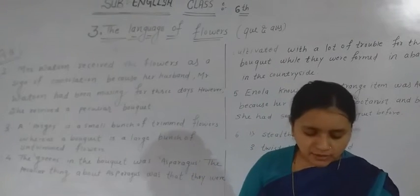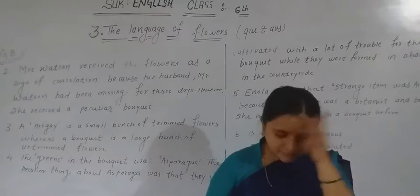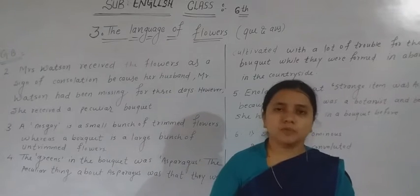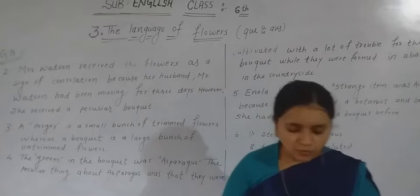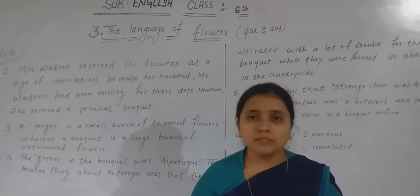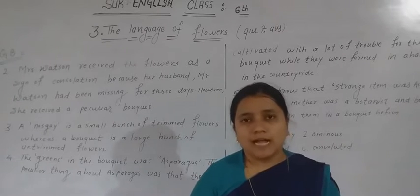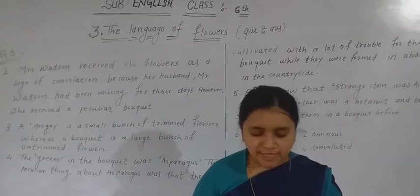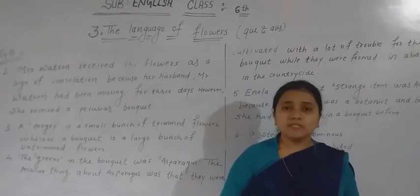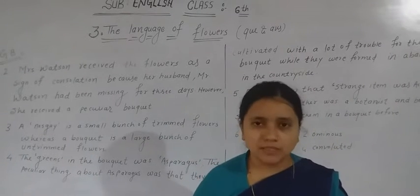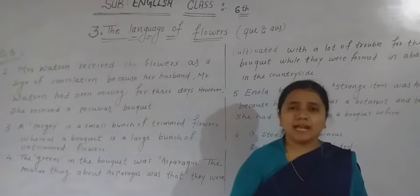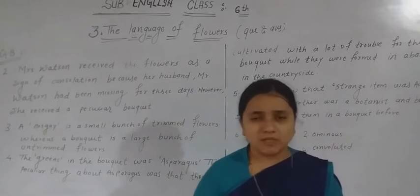Now let me see the next question: choose the correct answer. First, complete this exercise in your book, then after completing the question answers you may complete it in your notebook. The first question: what words does the author use to describe the bunch of flowers as unusual? The correct answer is 'bizarre and peculiar.' The bouquet was described as bizarre and peculiar. Bizarre means strange, and peculiar means ajeeb.